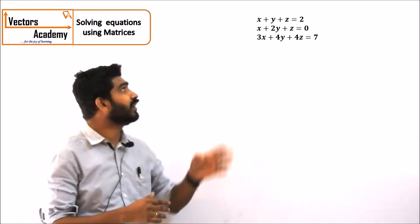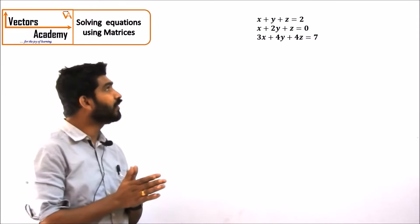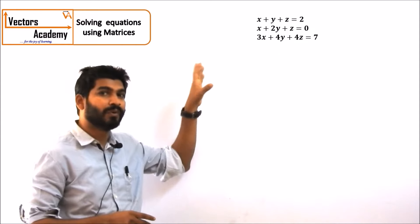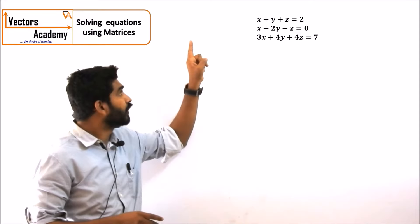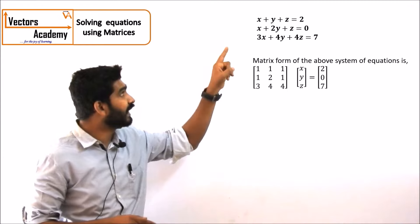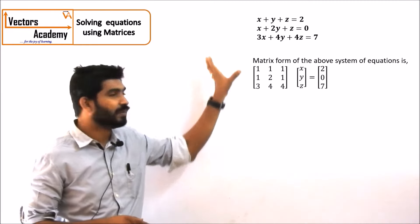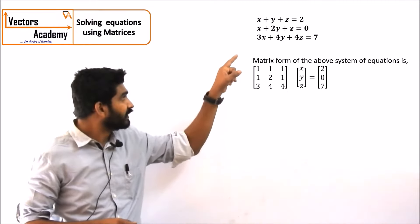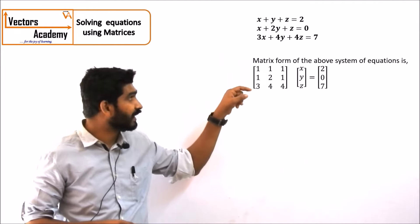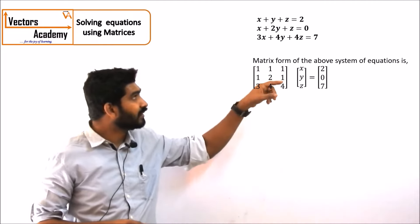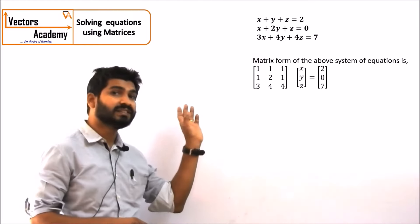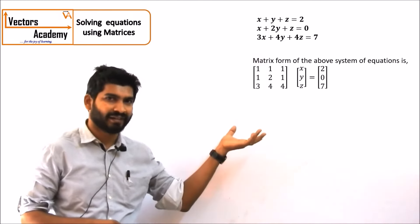Now consider these three equations. The first thing you have to do is to arrange these three equations in the form of matrices. We should place the coefficients of x, y, z of all three equations in a matrix. Then the second matrix will contain the unknowns, that is x, y, and z, and the third matrix will contain the constant coefficients.